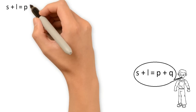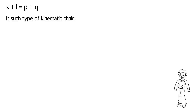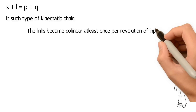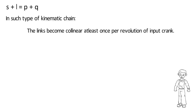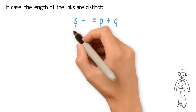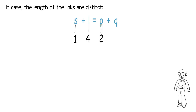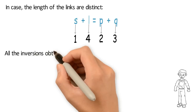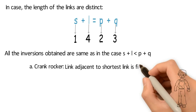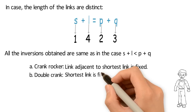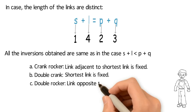Now we proceed to discuss the second part of the Grashof condition, which is S plus L equals P plus Q. In such a kinematic chain, the links become collinear at least once per revolution of the input crank. In the case where the length of the links are distinct — for example S equals 1 unit, L equals 4 units, P equals 2 units, Q equals 3 units — all the inversions obtained are the same as in the case S plus L less than P plus Q: crank rocker (link adjacent to shortest link is fixed), double crank (shortest link is fixed), and double rocker (link opposite to shortest link is fixed).